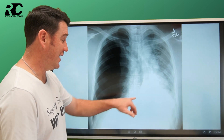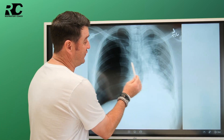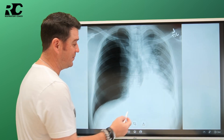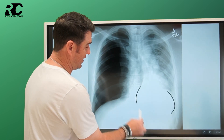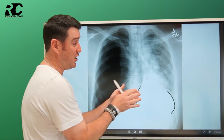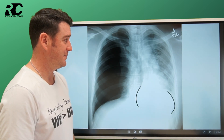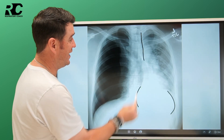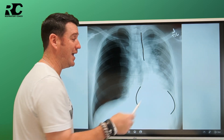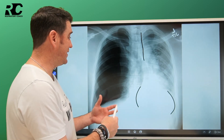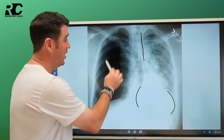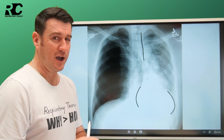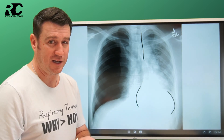I also noticed that the mediastinum is shifted. The heart border is right about here, shifted over to our patient's left. The carina is shifted over as well. Over on this side where I have increased radiolucency, I don't see any lung markings, and that's a big giveaway.